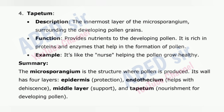Summary: The microsporangium is the structure where pollen is produced. Its wall has four layers — epidermis for protection, endothesium which helps with dehiscence, middle layer for support, and tapetum for nourishment of developing pollen.